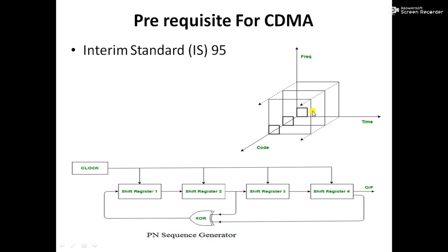In CDMA, narrow bandwidth signals are multiplied with a very large bandwidth signal called a pseudo-noise code sequence — PN code. Each user has its own PN code which is orthogonal to others. Auto-correlation is maximum and cross-correlation is zero for these PN codes. The codes repeat themselves after a very large time period and hence appear to be random. PN sequences are generated by a linear feedback shift register.